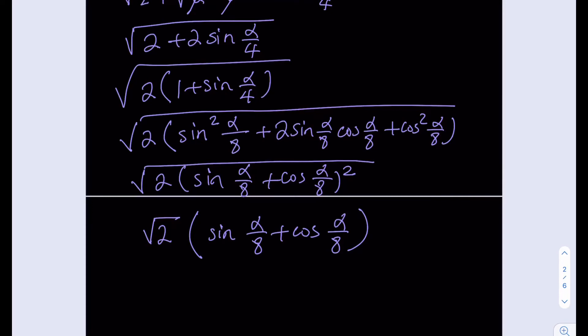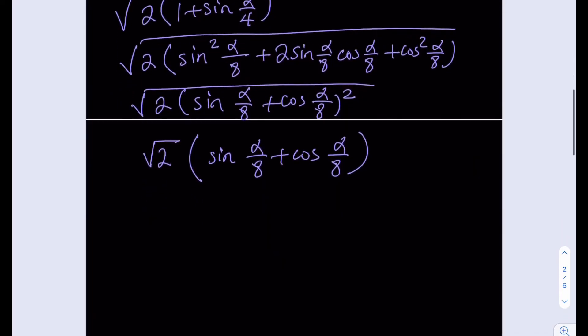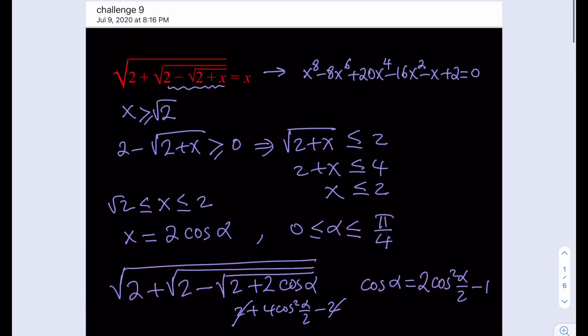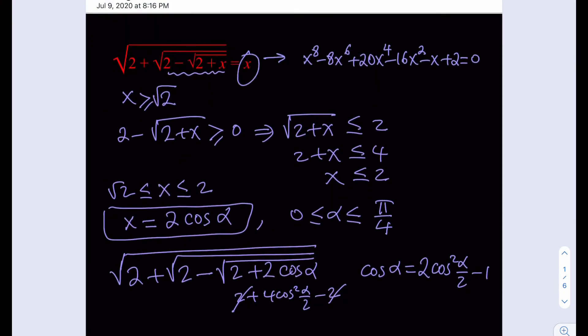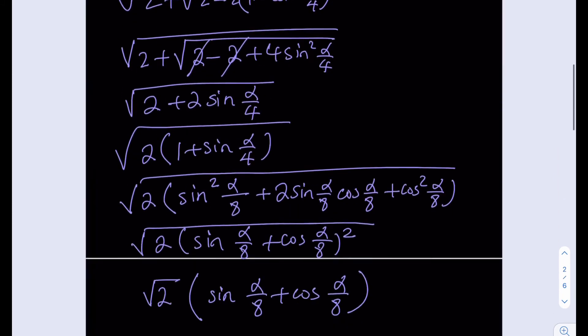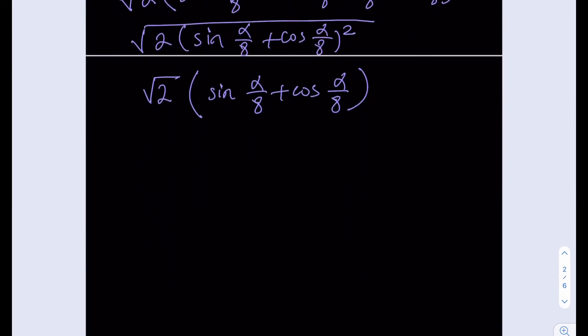We're almost done. At the beginning we had the substitution x = 2 cosine alpha, and since the right hand side is x, we're going to set this expression equal to 2 cosine alpha. Let's put it in a nicer form — is it possible to turn it into a sum or difference formula? Since we have sine(alpha/8) and cosine(alpha/8), we just need the sine and cosine of another angle with the same value.